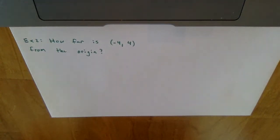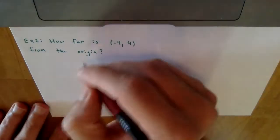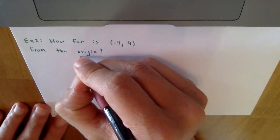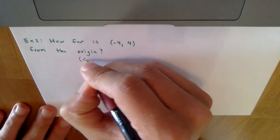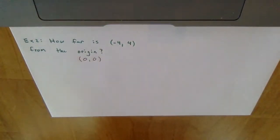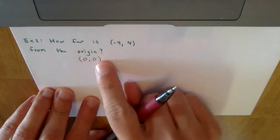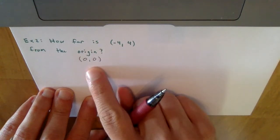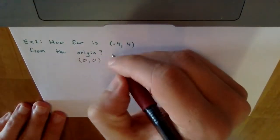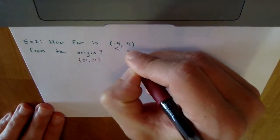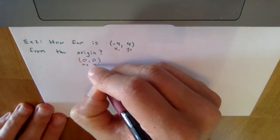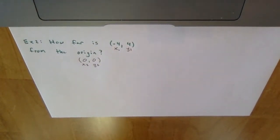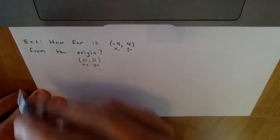Example 2 asks how far the point negative 4 comma 4 is from the origin. The origin is zero comma zero. So we're finding the distance between negative 4 comma 4 and 0 comma 0. I'll label these as x1, y1 and x2, y2, then plug into the distance formula.